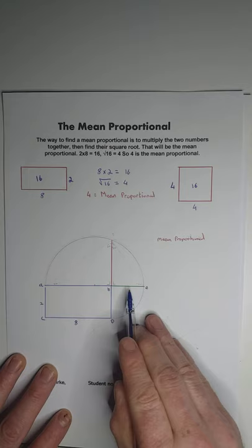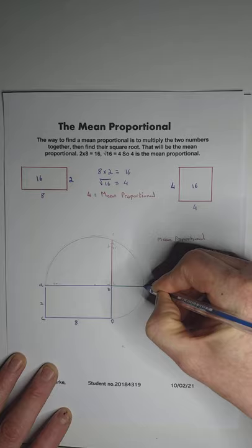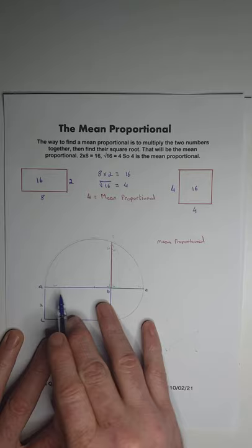You extend your AB line out, and you swing down your point D till it meets the extended line here. You find the center of the line AE, which is here, and you draw your semicircle.